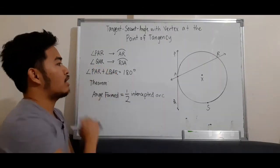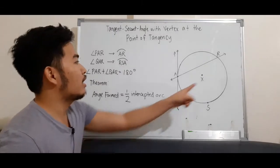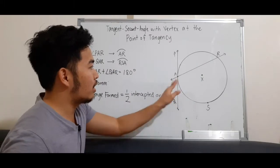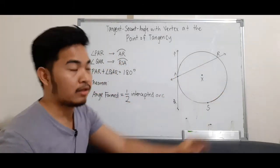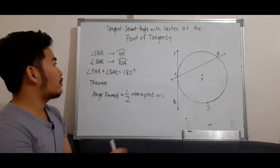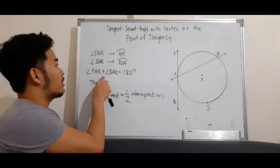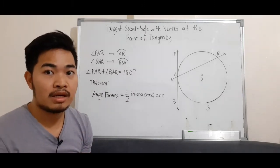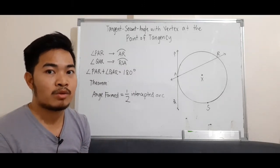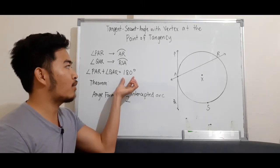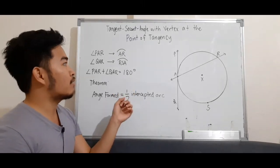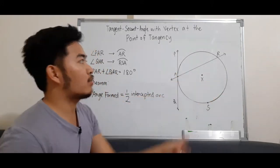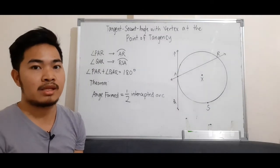For angle QAR, its intercepted arc is arc RSA. We also have the property that angle PAR plus angle QAR is equal to 180 degrees because they are a linear pair. We know that a linear pair is supplementary, so their sum is 180 degrees. And the sum of the intercepted arcs — arc AR plus arc RSA — is equal to 360 degrees.